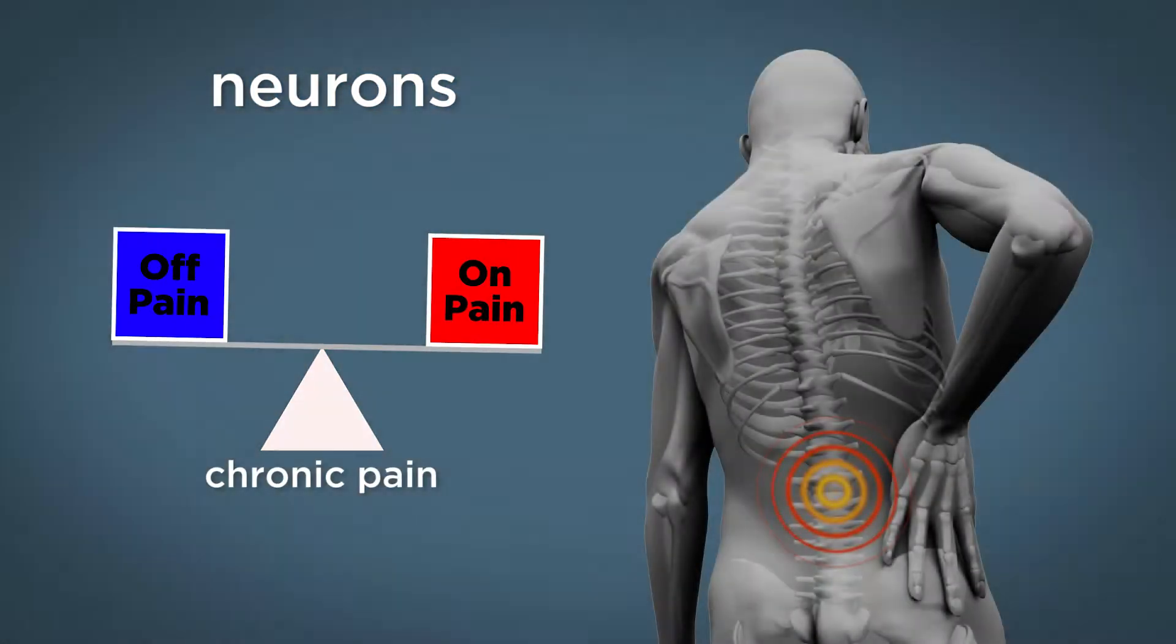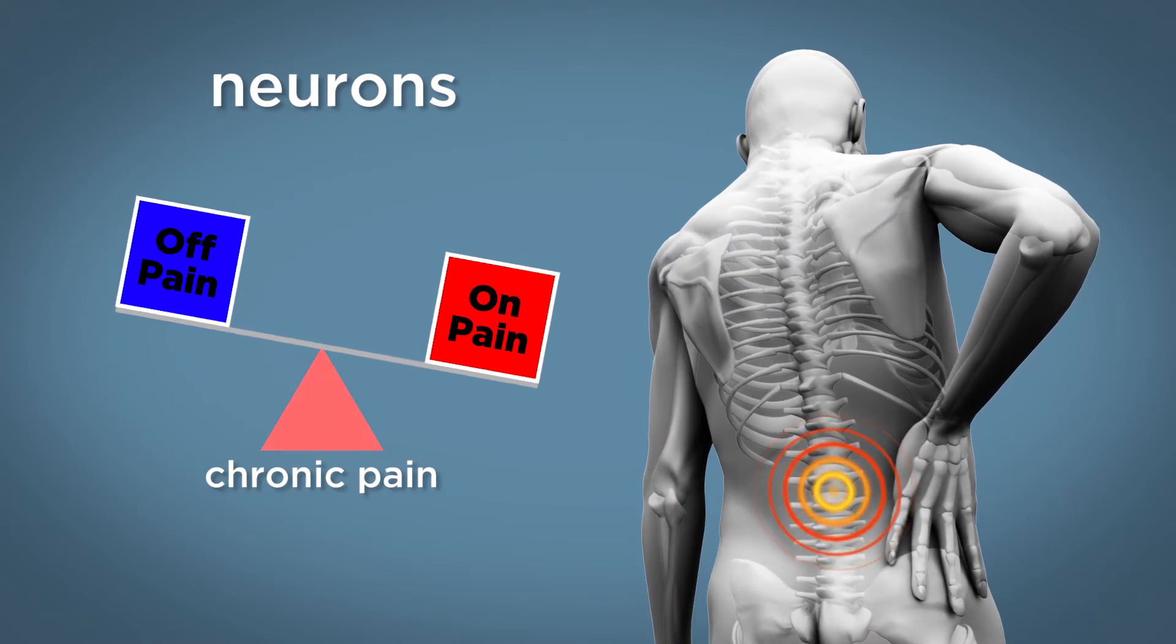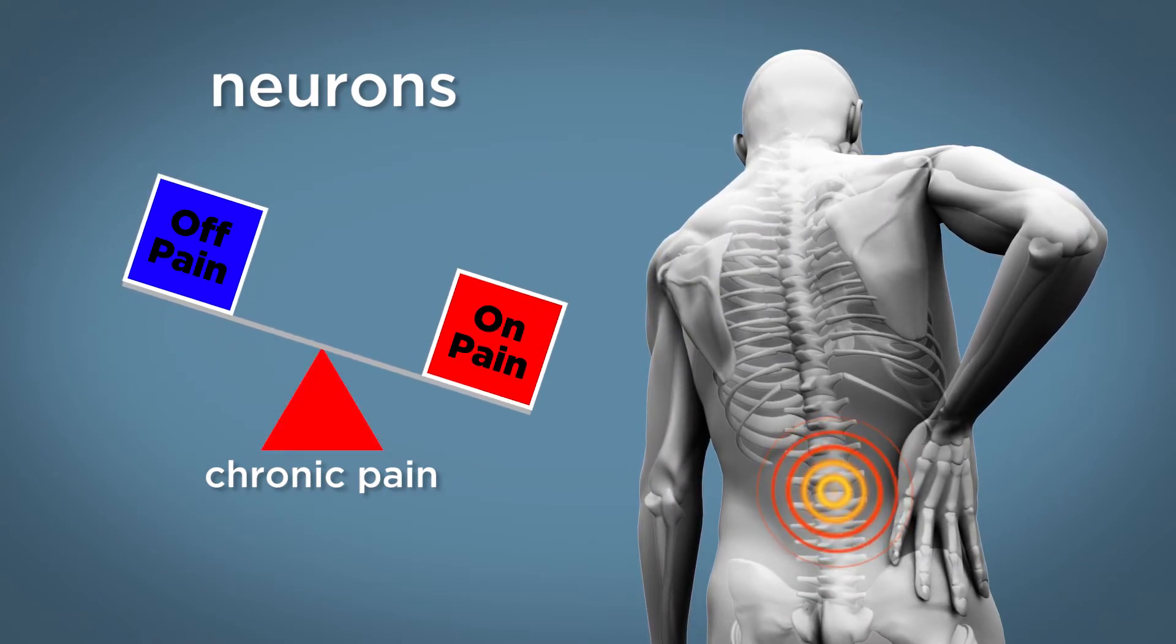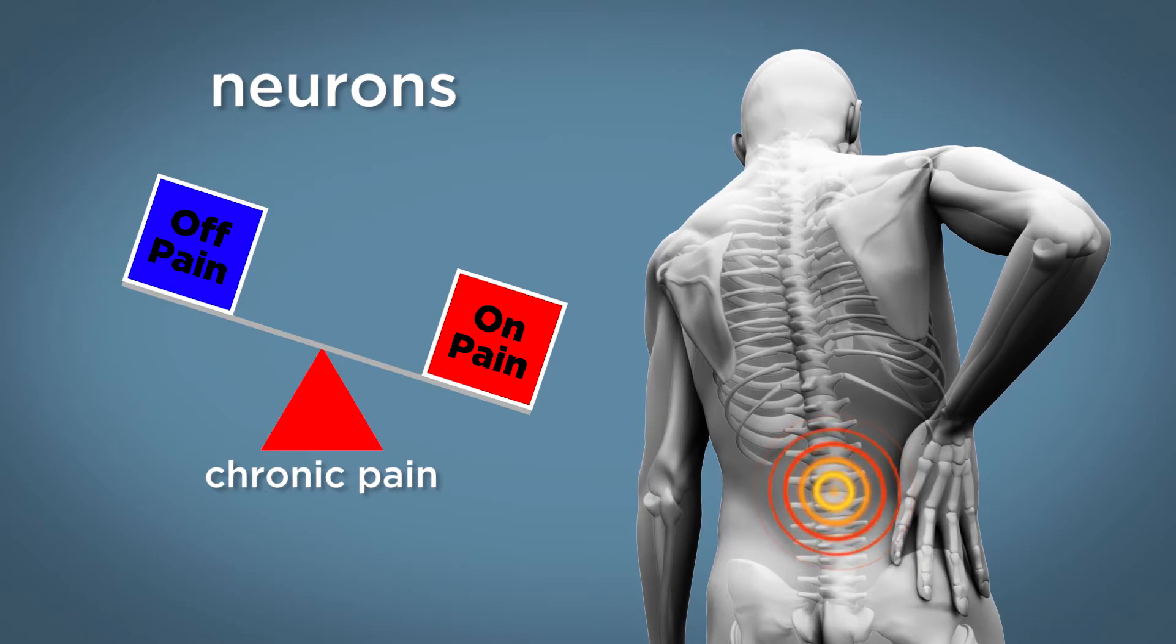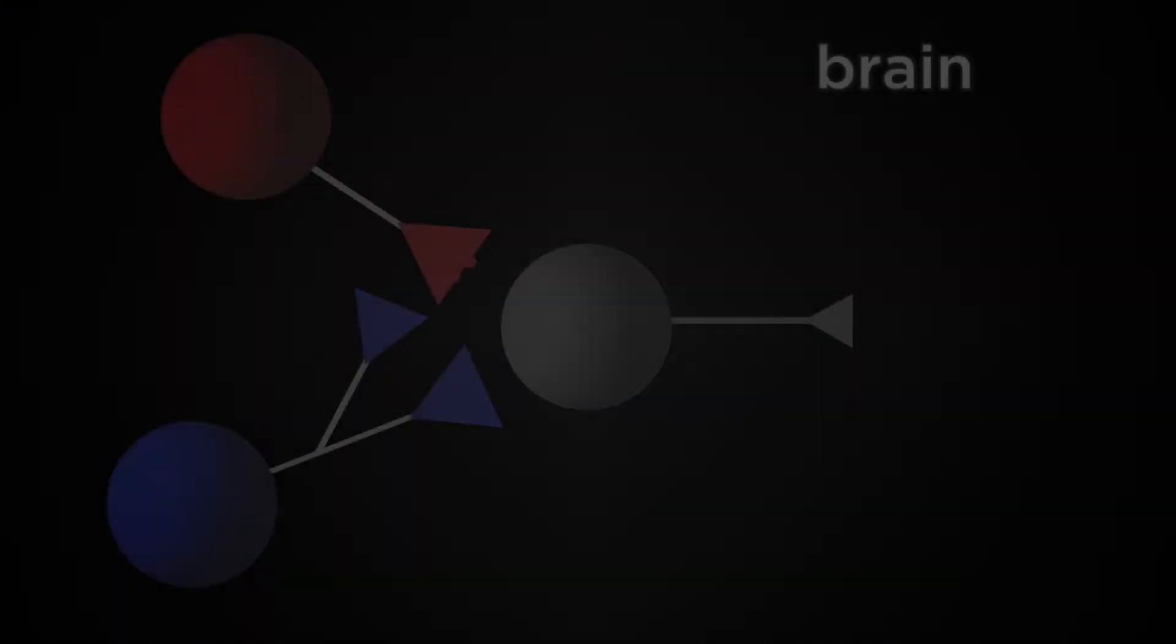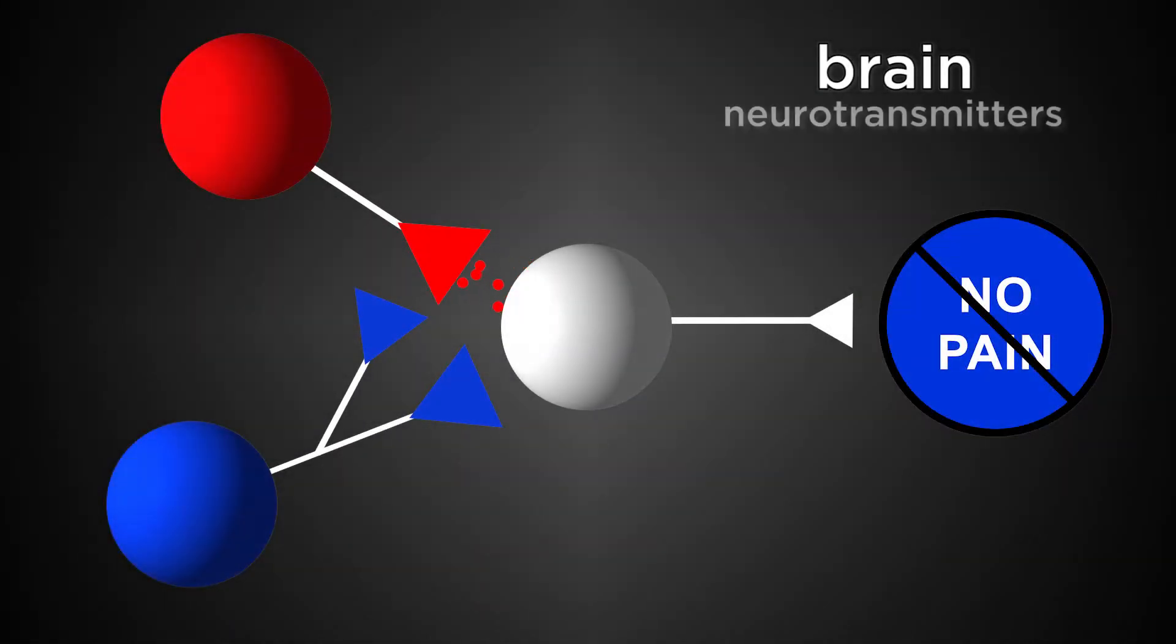When you have chronic pain, this balance changes so that there is now more activity in the cells that turn on pain and less activity in the cells that turn off pain. Our neurons in the brain use chemicals called neurotransmitters to both send the pain signals and to stop the pain signals.